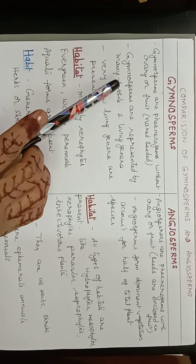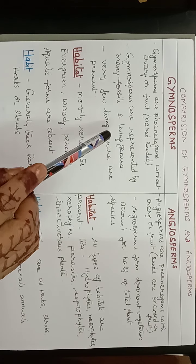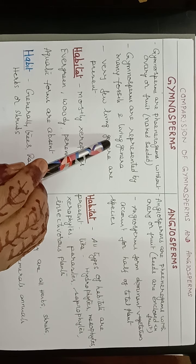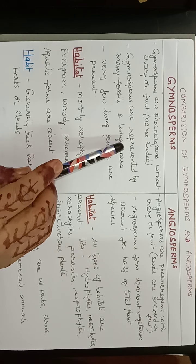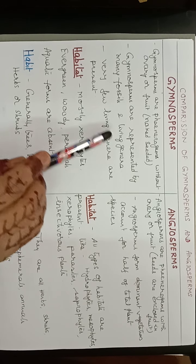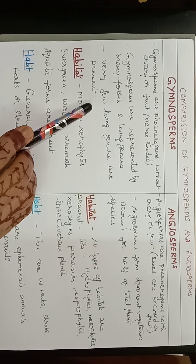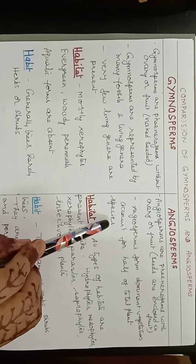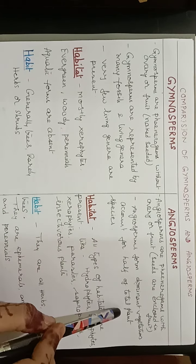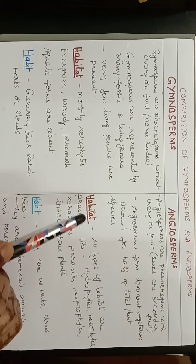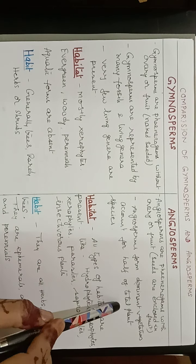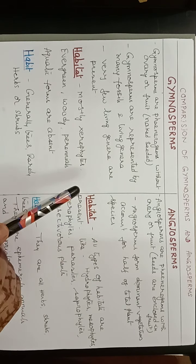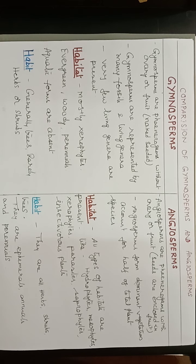Gymnosperms are represented by many fossils and some living genera; many of the gymnosperms are fossils and very few living genera are present. Angiosperms form the dominant vegetation on the earth — about half of the total plant species present are constituted by angiosperms.